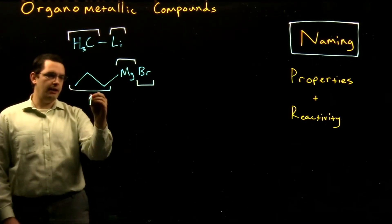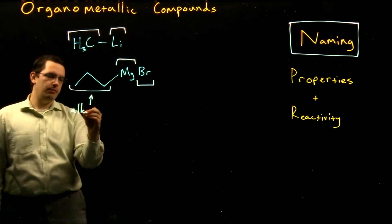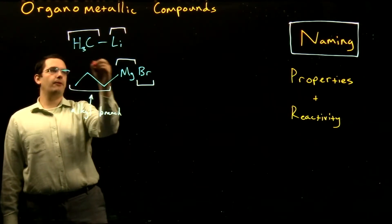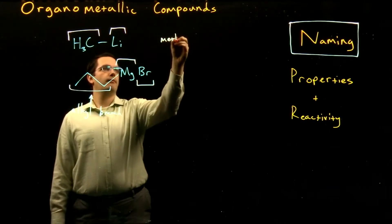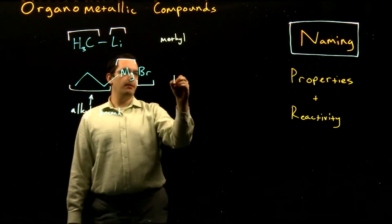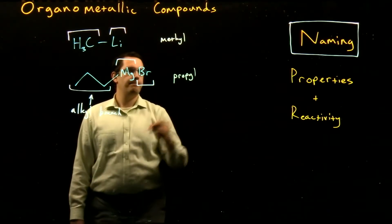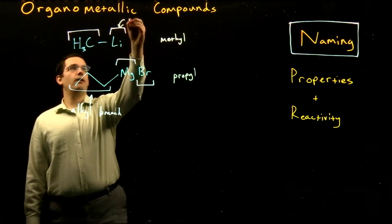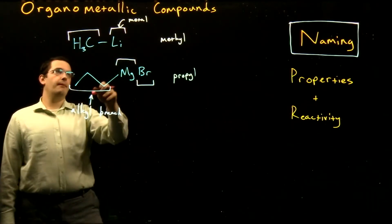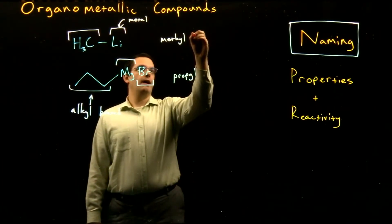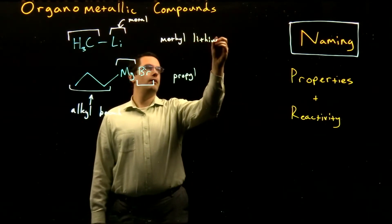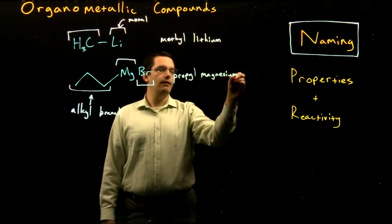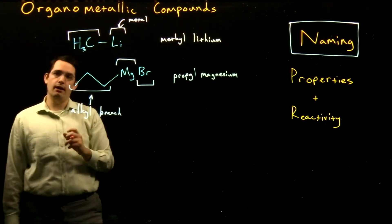First, for our carbon chain, we're going to name this as an alkyl branch. In this case, this would be a methyl branch, or down here we have a propyl branch. After that, we're going to put the name of our metal. So we have lithium or magnesium, giving us methyl lithium or propyl magnesium to indicate that metal in our organometallic compound.